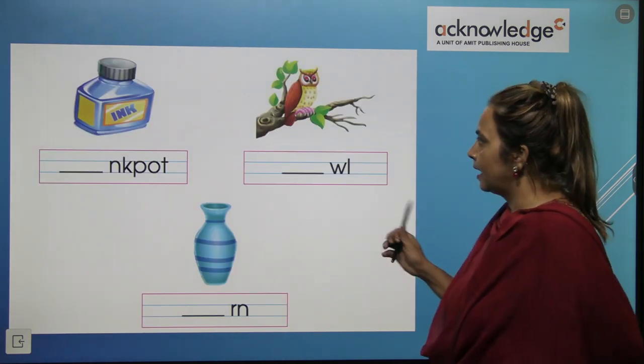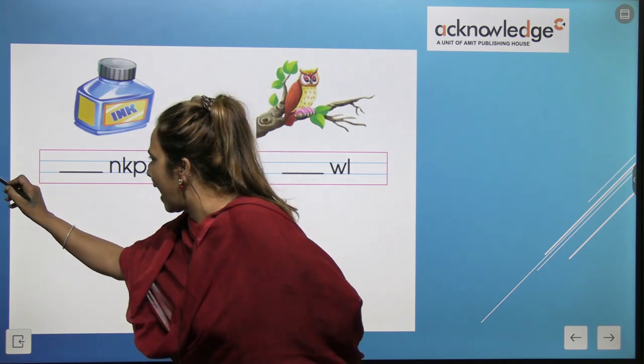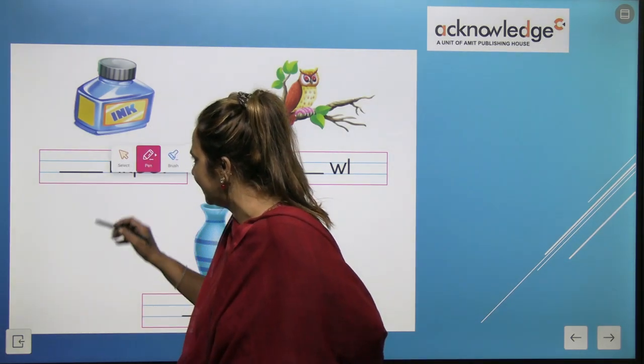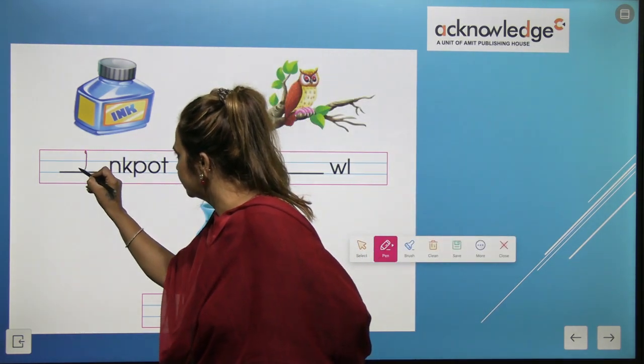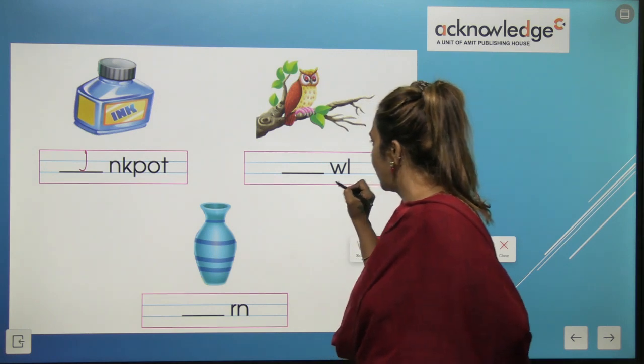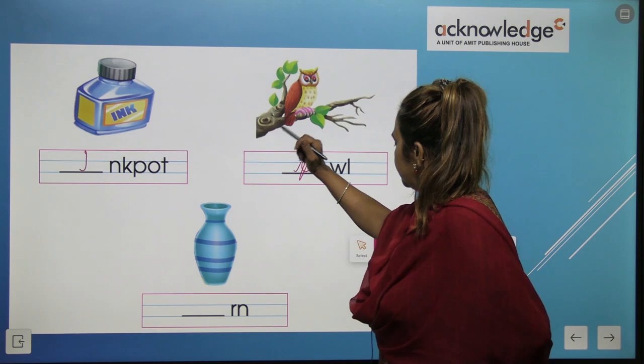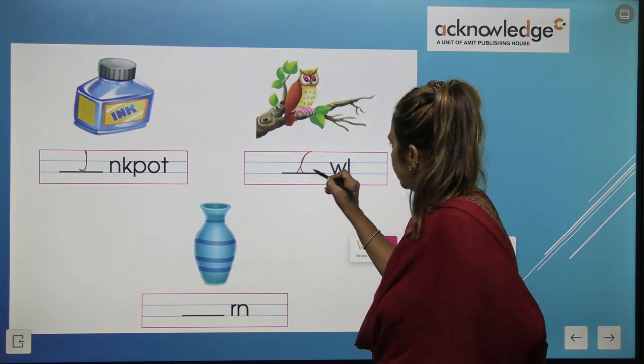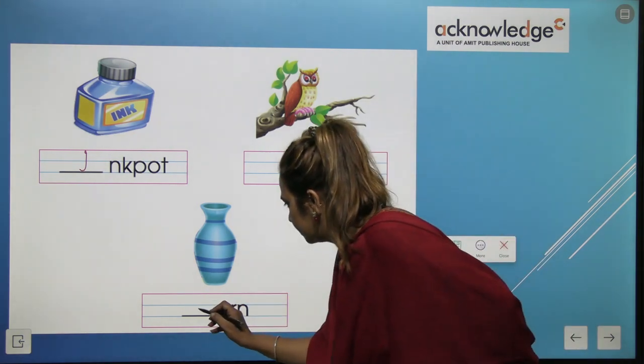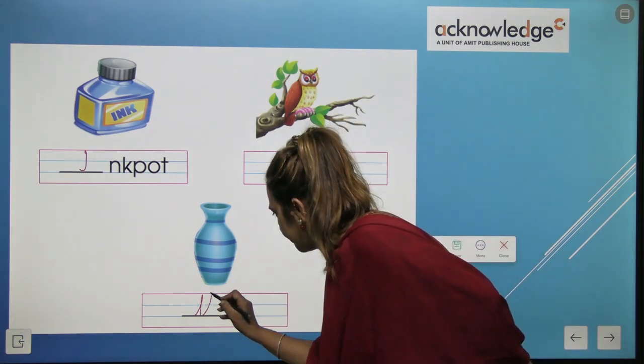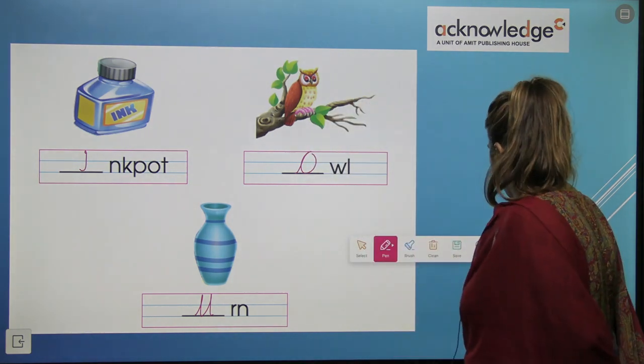Ink. E, double G, A. Now, what is next? Ink pot. Ink pot. Eye. Yes, very good children. Here is eye. Owl. Owl. Owl. Earn. Earn. Now, what these are vowels. Now, what is next?